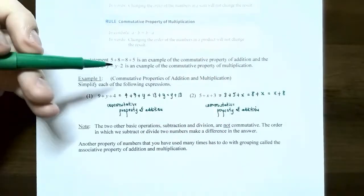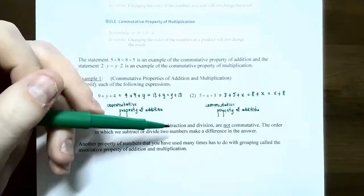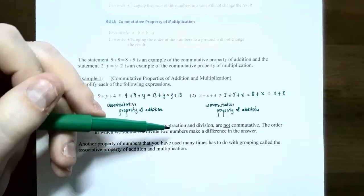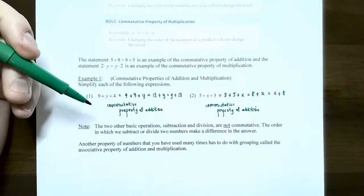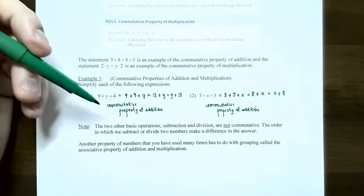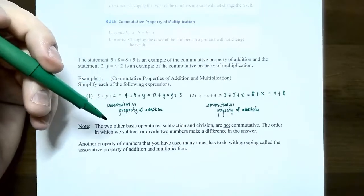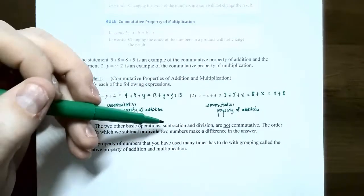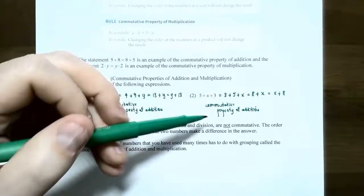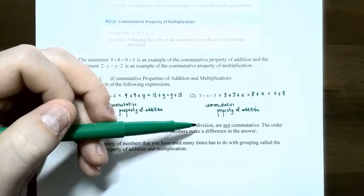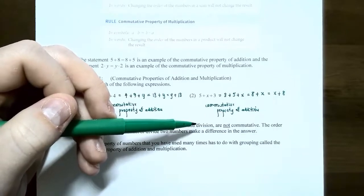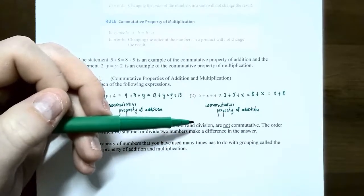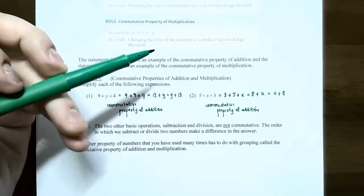Two basic operations, subtraction and division, are not commutative. If you take 8 subtract 6, you get 2. But if you reverse the order to 6 subtract 8, you get negative 2 — not the same answer. So subtraction is not commutative. Same thing with division: 20 divided by 5 gives 4, but 5 divided by 20 gives one-fourth. The answers are not the same, so division is also not commutative.